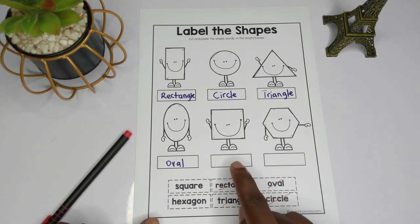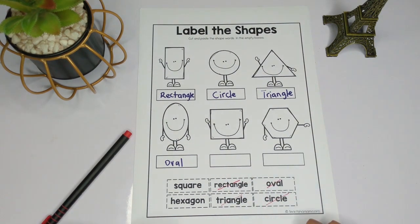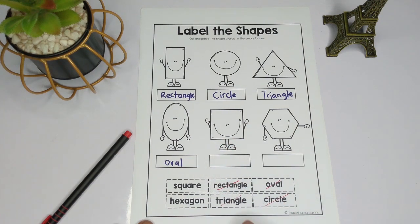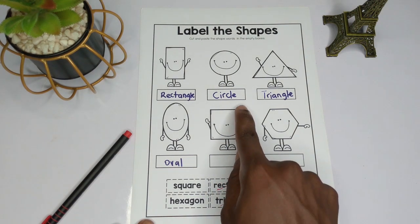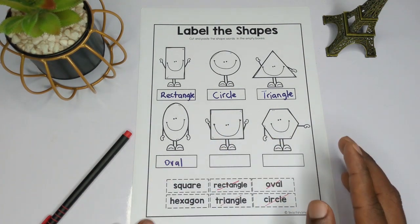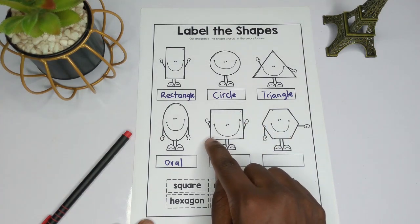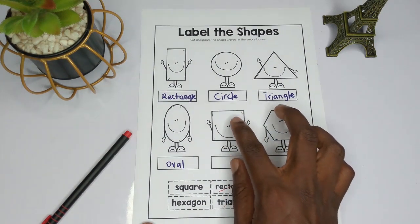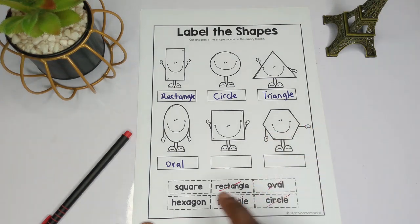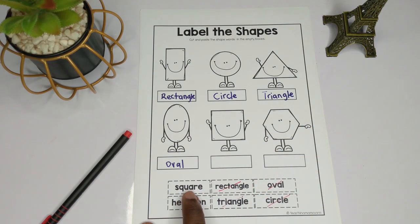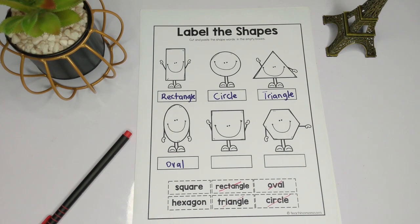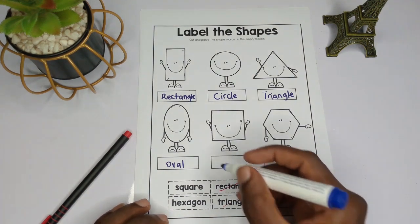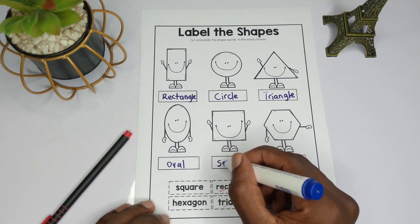We are only left with two shapes now. If you look at this shape, it has one, two, three, four sides and they all look equal in length. This shape is what we call a square — s-q-u-a-r-e. So I write my square over here.